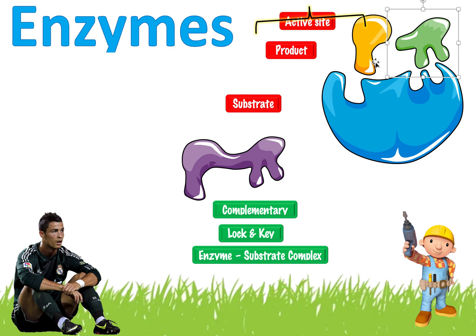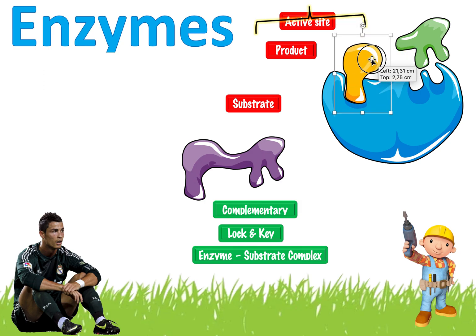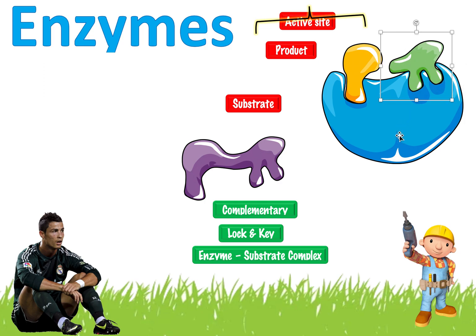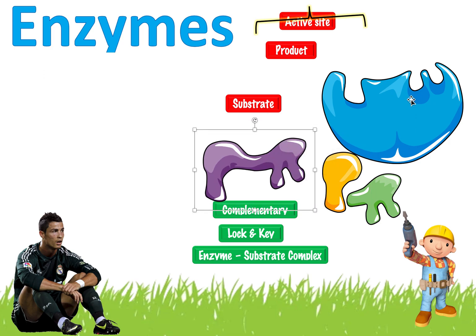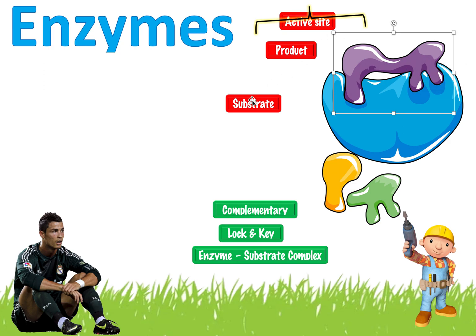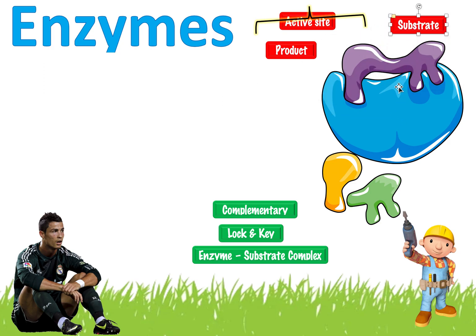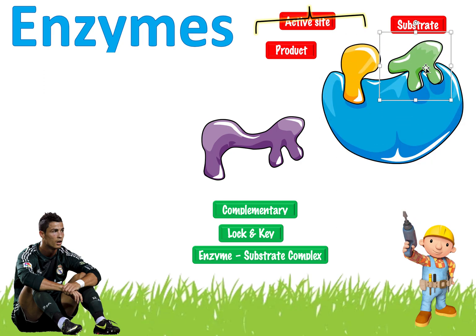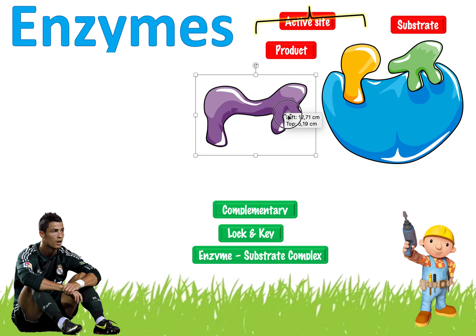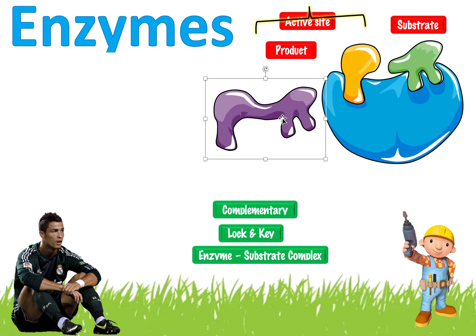Not only can an enzyme take two substrates and make them combine to form a product, enzymes can also break things, just like tools can. So the substrate can also be a larger molecule that goes into the enzyme and gets broken down into products. Know that enzymes can both make things and break things — it can vary depending on the situation.